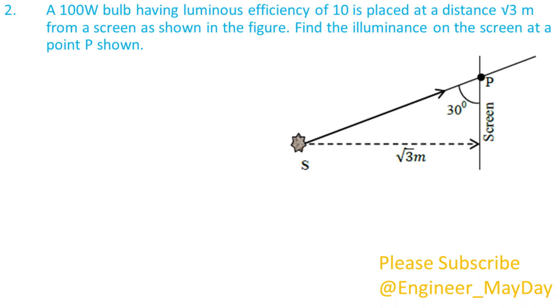Here is a second question. A 100 watt bulb having luminous efficiency of 10 is placed at a distance of square root of 3 meters from a screen, as shown in the figure. Find the illuminance on the screen at point P shown.